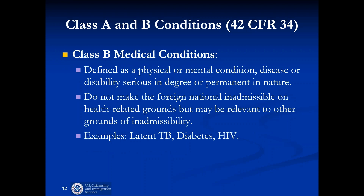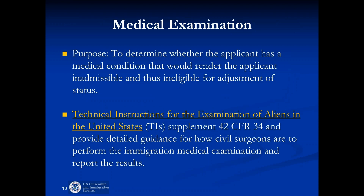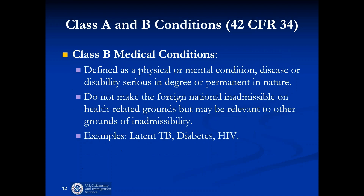Class A and Class B medical conditions: the immigration medical examination involves diagnosing Class A or Class B conditions under Section 212. A Class A condition, such as tuberculosis, automatically makes the foreign national inadmissible. USCIS accepts the civil surgeon's diagnosis as conclusive — we are not medical experts and must go by what the civil surgeon has reported on the form. A Class B condition is a physical or mental condition, disease, or disability that is serious in degree or permanent in nature, and does not make the foreign national inadmissible, but may impact the public charge ground.